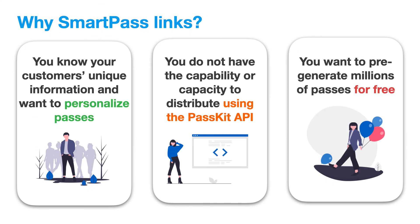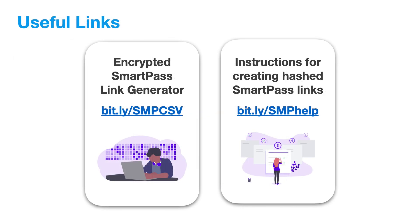Thank you so much, Patrick — that is absolutely fantastic. Hopefully you can see the perfect application for yourself where you need to personalize passes, whether that's personalizing membership cards, coupons, or tickets, but you're not necessarily distributing using the PassKit API. As you saw, you can pre-generate all of these links for free and only start generating a record in PassKit when your customers visit that link. Resources Patrick shared are available at bit.ly/SMP-CSV for the encrypted SmartPass link generator, and bit.ly/SMP-help for instructions on creating hashed SmartPass links. We're looking forward to seeing great personalized passes using this tool.